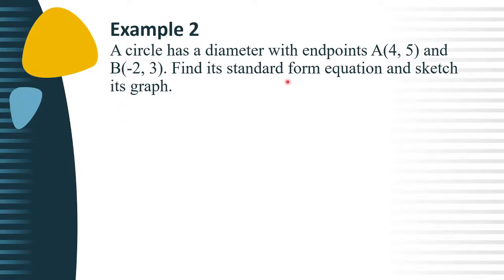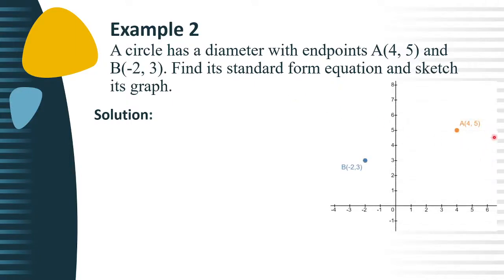To find the standard form of the circle, first we need to determine the radius and the center of the circle. The diameter of the given circle is the distance between point A and point B. So we let x sub 1 equals 4, y sub 1 equals 5, x sub 2 equals negative 2, and y sub 2 equals 3.